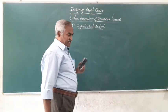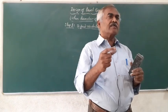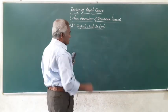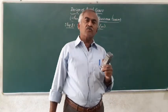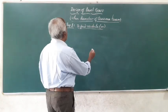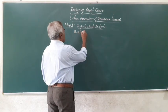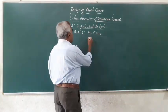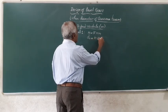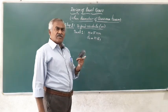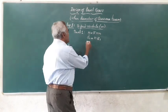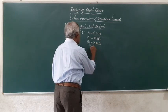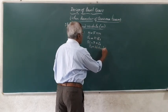To find the required module, we conduct trials using standard values of module from the data handbook. In trial 1, assume M = 5 mm. Using D1 = MZ1, with D1 = 80 mm and M = 5, we get Z1 = 16 teeth on the pinion. We now compare M² × Y permissible (2.65) with the induced value.